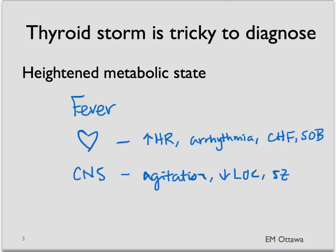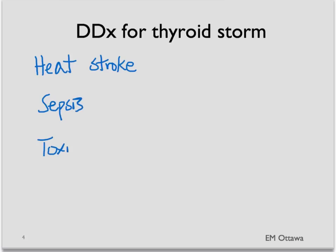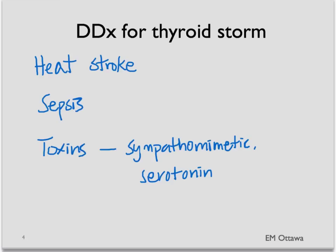What conditions can you think of that look like this? There are three main broad categories. First, heat stroke — often the history might be helpful. The second category is sepsis, which can affect any part of the body. The last broad category is toxins, such as sympathomimetics, serotonin syndrome, or neuroleptic malignant syndrome. They can all look like thyroid storm.